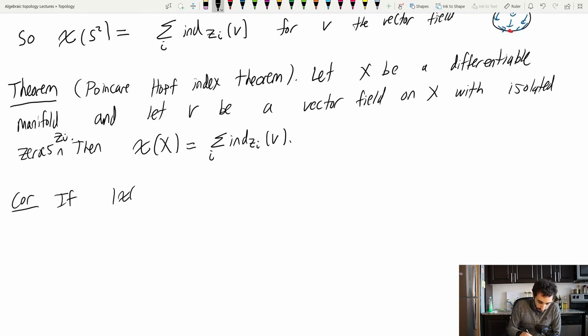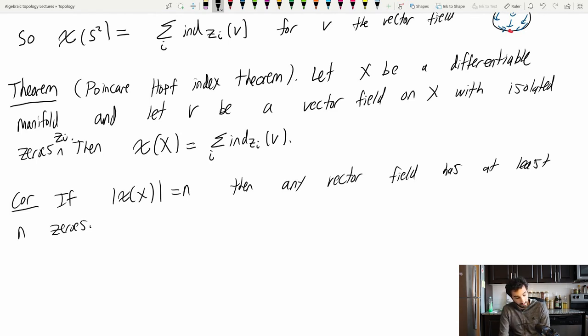So here's, for example, the most baseline corollary you can have. If the Euler characteristic has absolute value equal to n, then any vector field has at least n zeros. So, for example, this generalizes that Hairy Ball theorem. The Euler characteristic of the sphere is 2. Which tells me that any vector field needs to have at least two zeros. Which is in fact even more information than the Hairy Ball theorem. We just knew we couldn't have no zeros. We also know now that there's no vector field with a single zero.